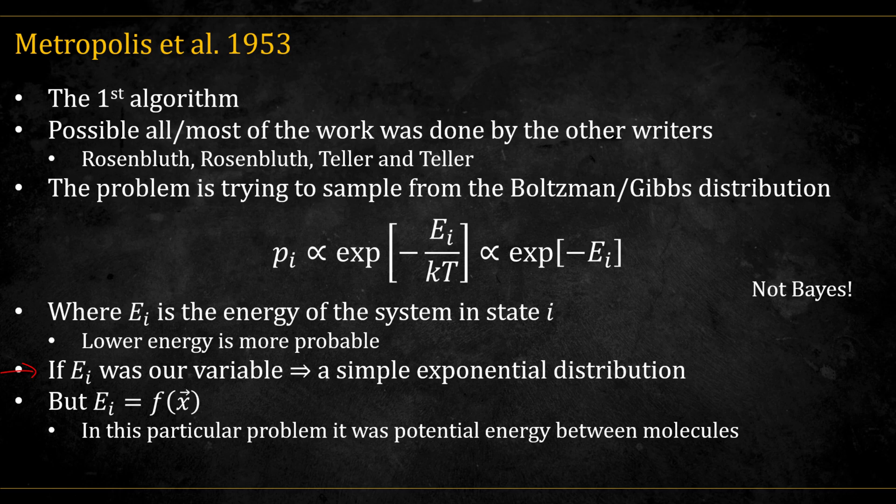If energy were just a single variable, this would reduce to a simple exponential distribution. But in practice, energy E is a function of a huge vector of variables. The original problem was modeling the potential energy between molecules. Even if you discretize the system and only allow hundreds of molecules, the number of possible states explodes and becomes completely intractable.